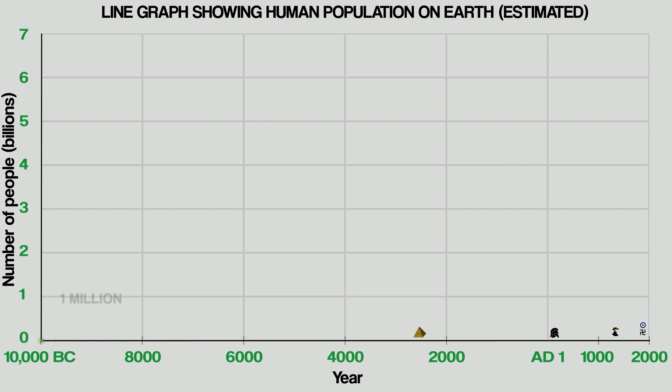In 10,000 BC, there were only about 1 million people on the whole planet. That might sound like a lot, but London's modern population is about 9 million, and that is just one city. 1 million people barely even shows up on this graph, and that's how things stayed for a long time. By the time we get to 5000 BC, the population had risen to 5 million — still not enough to make a big impact on this graph.